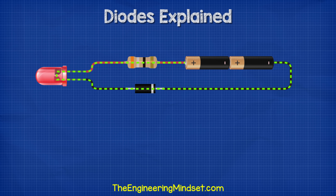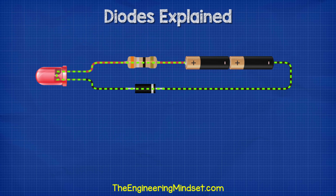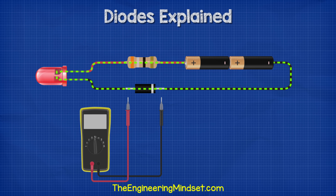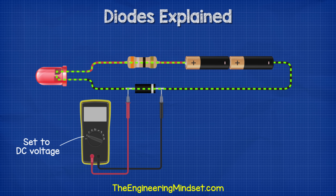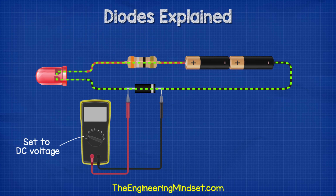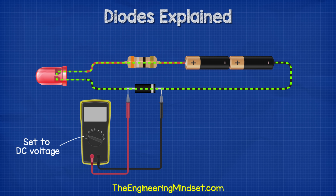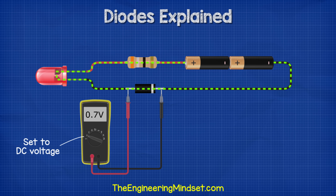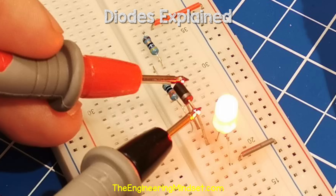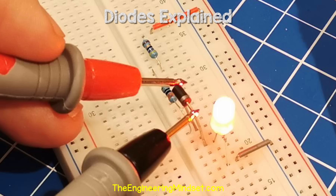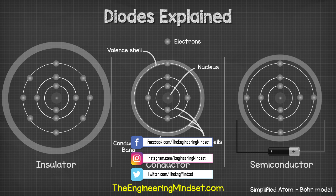To test the diode in a circuit for voltage drop, we move the multimeter to the DC voltage function, place the black probe on the striped end and the red probe on the black end. This gives us a reading — for example 0.71 volts — which is the voltage drop.